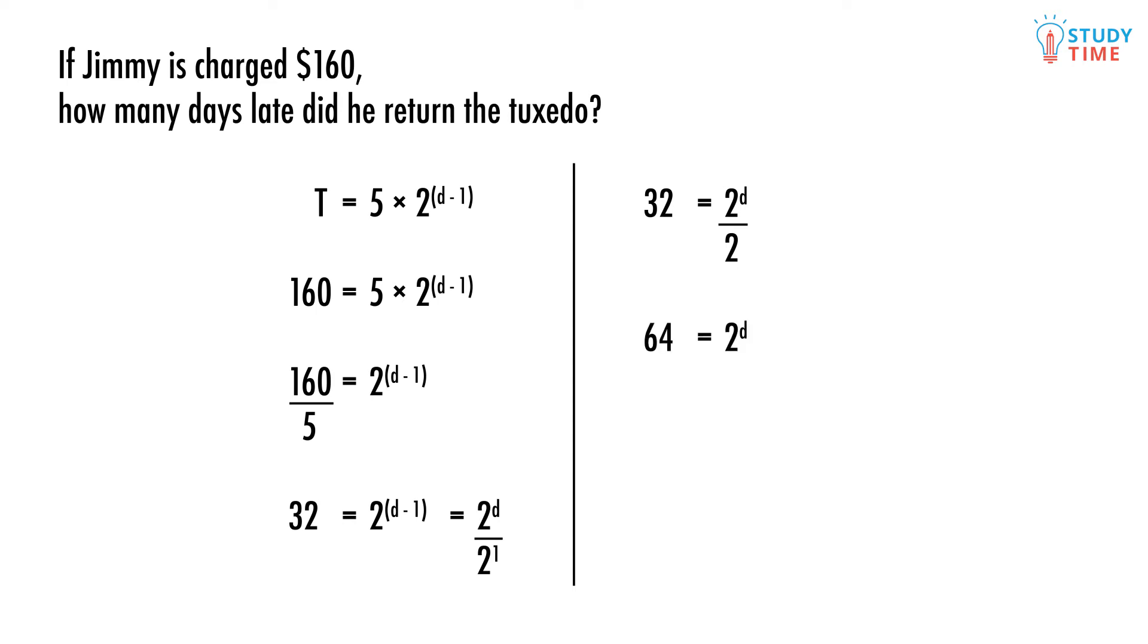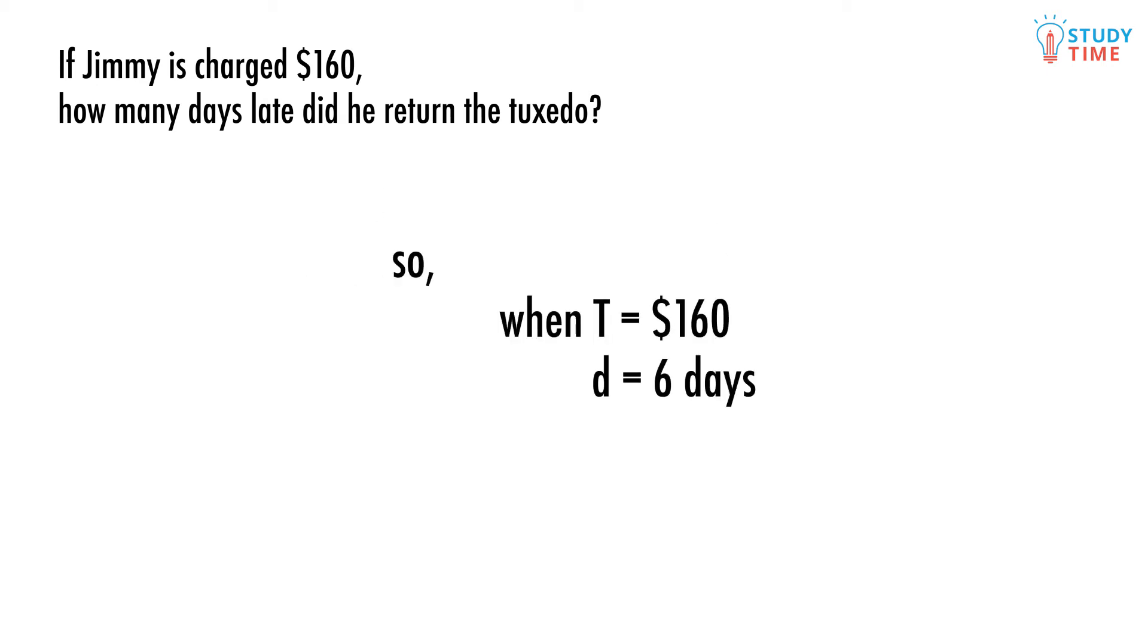Let's multiply both sides by 2. 64 equals 2 to the power of d. Now we have to guess what d is. How many twos multiplied together makes 64? We can do it in our heads probably - 2 times 2 is 4, times 2 is 8, times 2 is 16, times 2 is 32, times 2 is 64. So six twos multiplied together makes 64. So that's our answer.